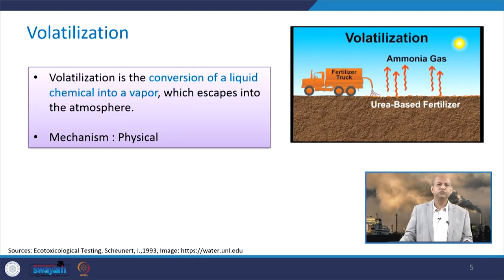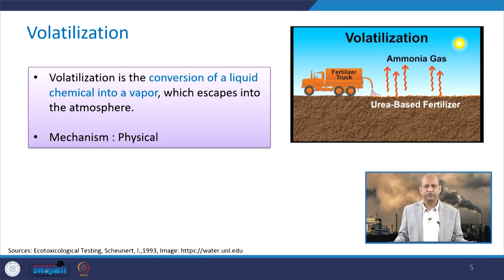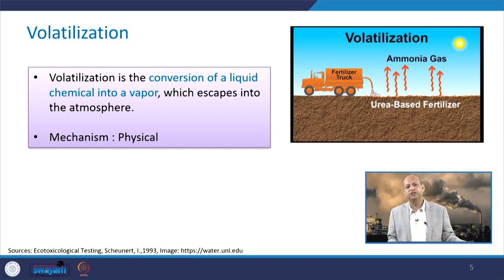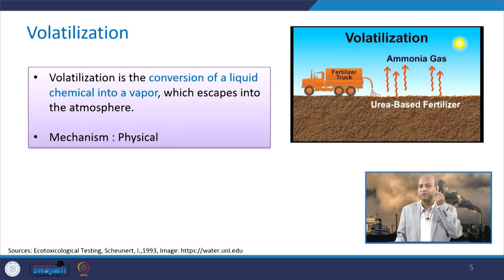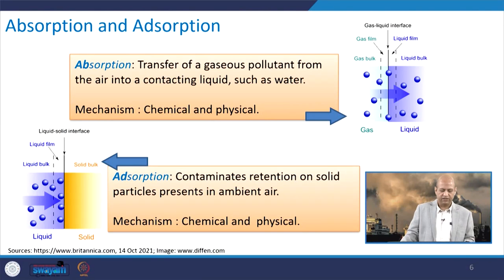Now we see volatilization. In this process, basically the conversion of a liquid chemical into vapour happens because of temperature and pressure — those physical processes. Volatile compounds are there — you might have heard VOCs, volatile organic compounds. Like on the petrol pump you have some smell because gasoline has hydrocarbons that can form vapour. That vapour is there, and this is because of VOCs — volatile organic compounds — they become part of air pollution.